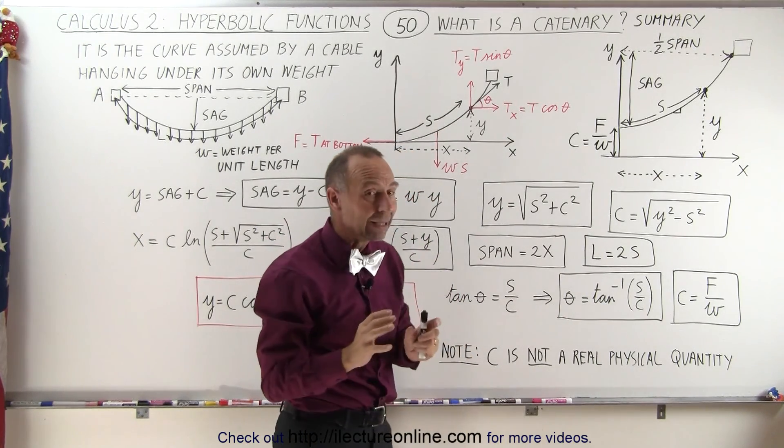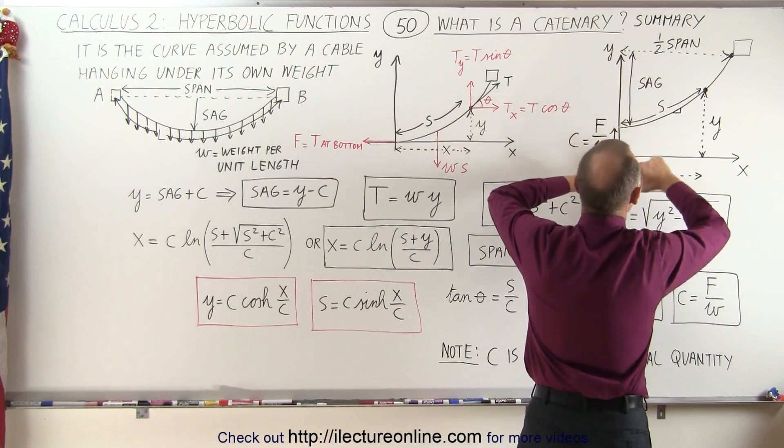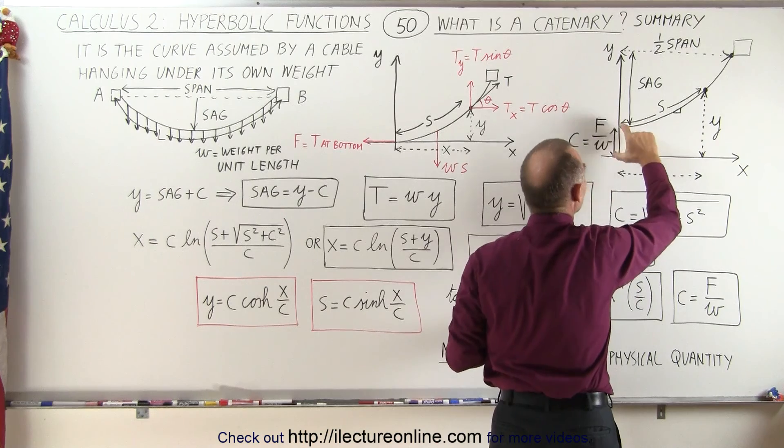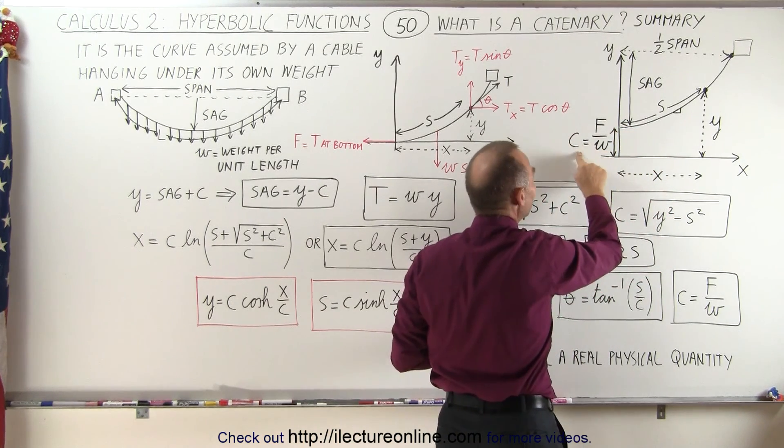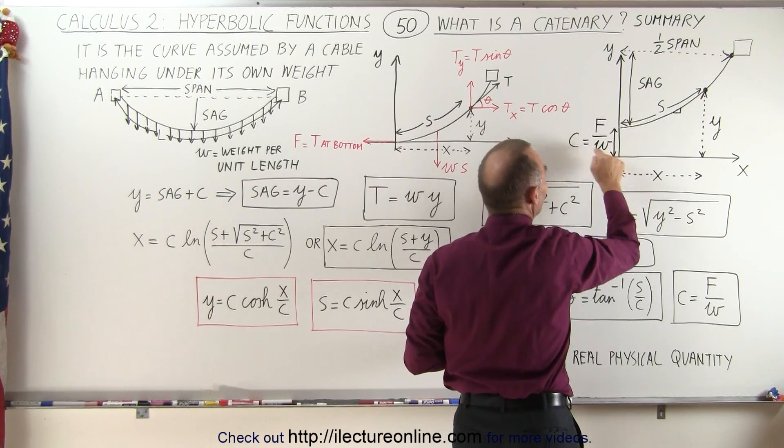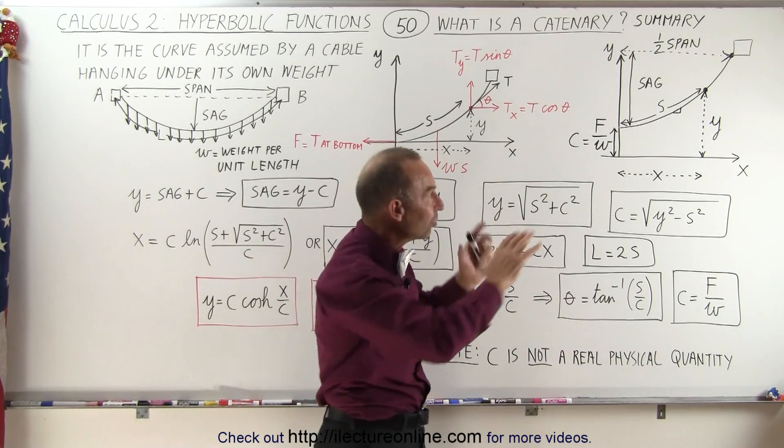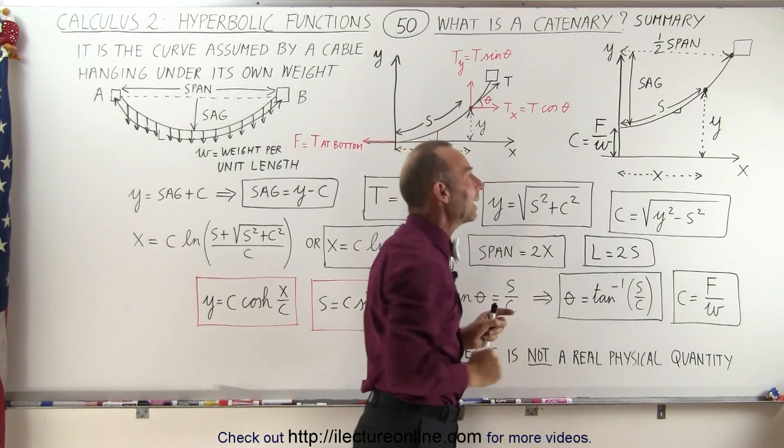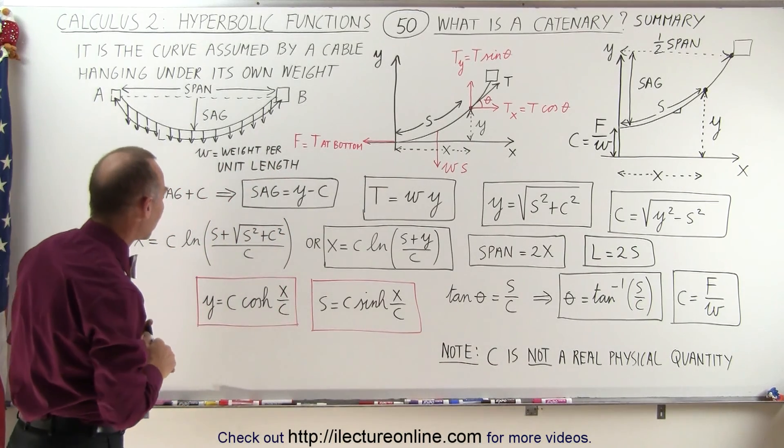But then finally we realize that if we take that cable and we move it up, at least the function of the cable, we move it up so that the bottom of the cable is a distance c above the origin, and we define c as the ratio of the tension at the bottom of the cable divided by the weight per unit length of the cable, we can now write the function or the equation of that hanging cable in terms of the hyperbolic functions, the hyperbolic sine and cosine.